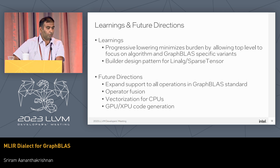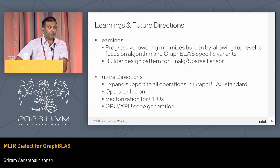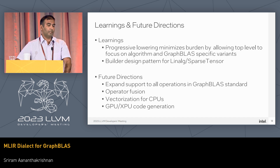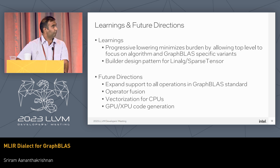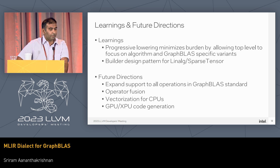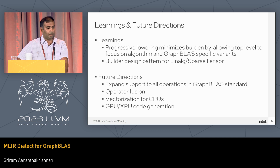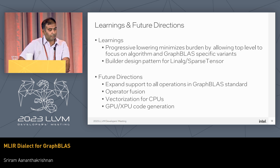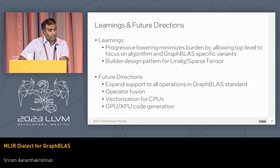One interesting observation was how we tackled the combinatorial explosion: at the top level we focused only on the GraphBLAS-specific variants — the algorithm, mask, and mask complements — and pushed the rest of the combinatorics to sparse tensor, effectively distributing the explosion across different dialects. I also found myself writing complex sequences of sparse tensor or semiring ops inside a linalg generic payload, so having a builder pattern was very useful. For future directions, we want to support all operations in the GraphBLAS spec, and we're interested in trying out the transform dialect for operator fusion, as well as using the sparse compilation pipeline for vectorization and GPU code generation.